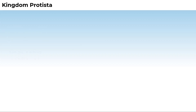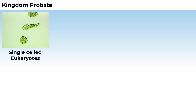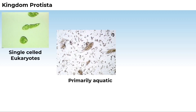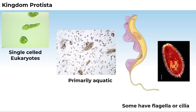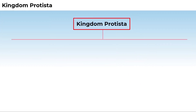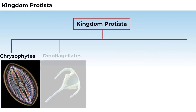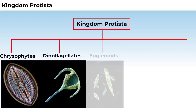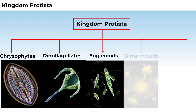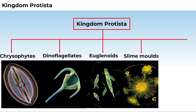All single-celled eukaryotes are placed under Protista. Members of Protista are primarily aquatic. Some of them have flagella or cilia. Some examples of the Protista kingdom are chrysophytes, dinoflagellates, euglenoids, slime moulds, and protozoans.